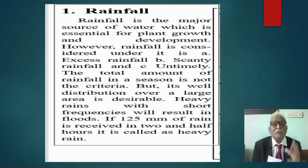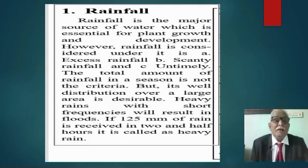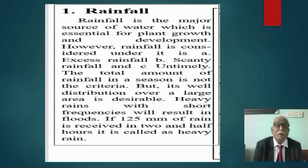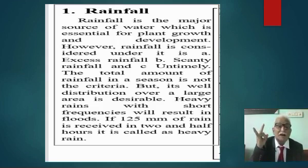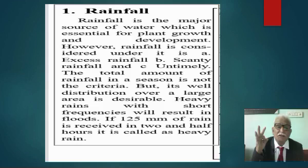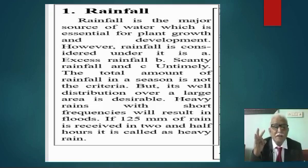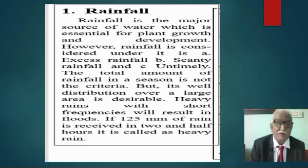We will learn about six subheadings. The first one is rainfall. Rainfall is one of the major sources of water, which is essential for plant growth and development. However, the same rainfall is considered abnormal under three conditions: excess rainfall, scanty rainfall, and untimely rainfall. The total amount of rainfall in a season is not the sole criteria; its well distribution over a large area is desirable. Heavy rains with short frequencies will result in floods. If 125 mm of rain is received in two and a half hours, it is called heavy rain.